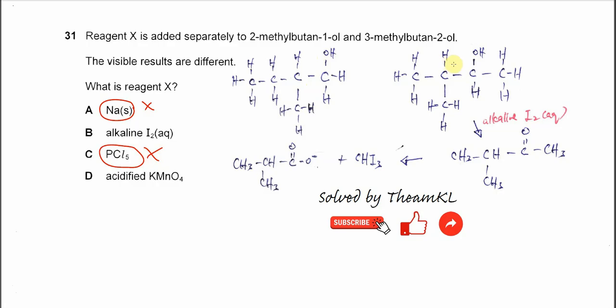For these two alcohols, this is a primary alcohol and this is secondary alcohol. Both can be oxidized by KMnO4 and decolorize KMnO4. So the purple color turns colorless. So acidified potassium permanganate is not the answer.